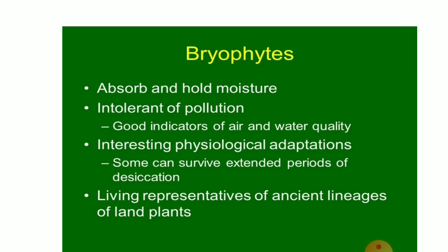The water-holding capacity of some members of the acrogynous liverworts is remarkable. Members like Frullania have a complicated water-sack system for the retention and storage of water. Their main function is to hold the rainwater which trickles down the tree trunk or rocks during showers, which would be lost otherwise.